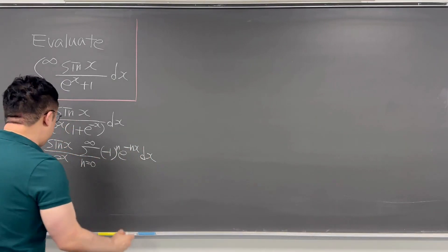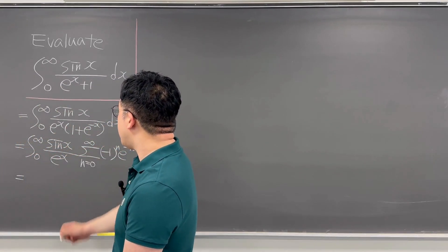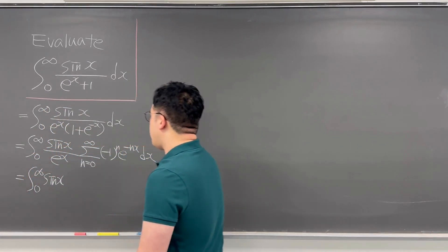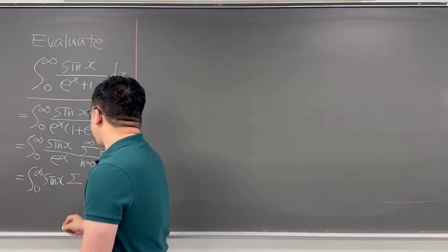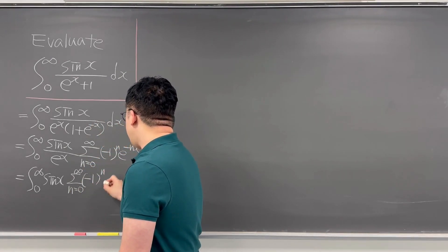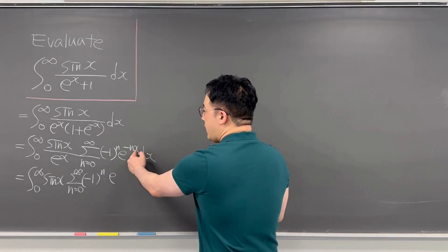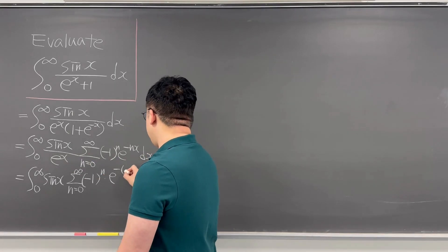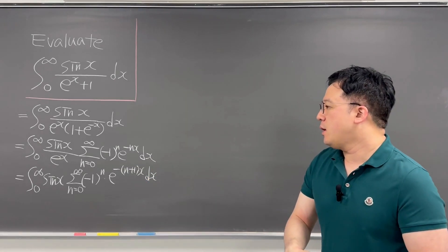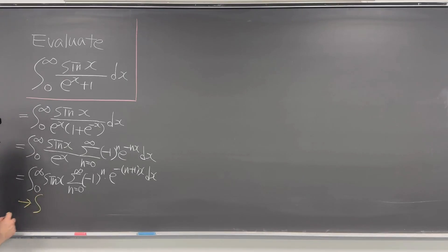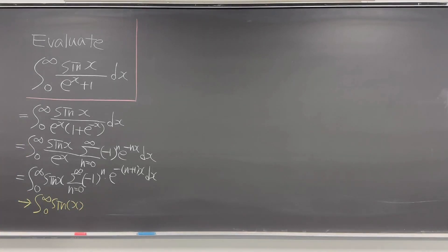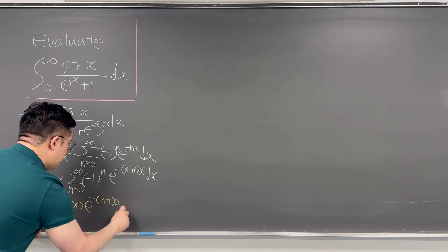So if you keep rewriting this, it is now the same as the integral of just the sine x. Integral from 0 to infinity, then we have sine x, times the summation from n equal to 0 to infinity, with alternating sign negative 1 to the power of n, times e to the power of negative parenthesis n plus 1 times x, and dx. So now we are working on the integral from 0 to infinity of sine of x times e to the power of negative (n+1)x, dx.